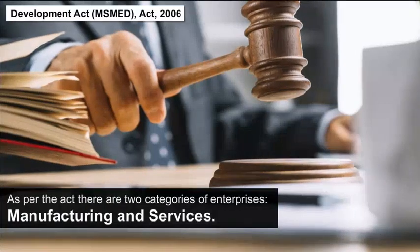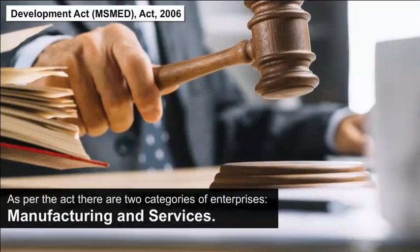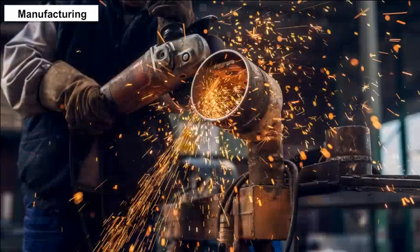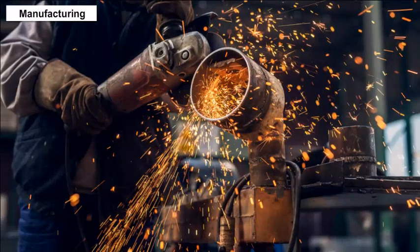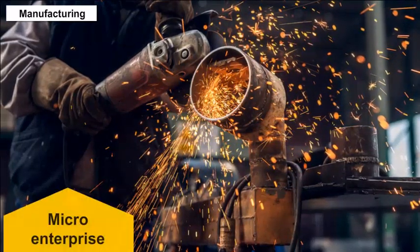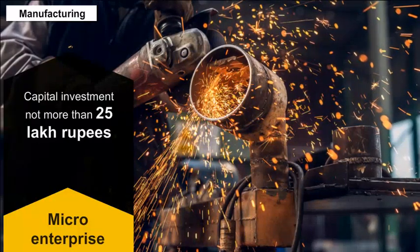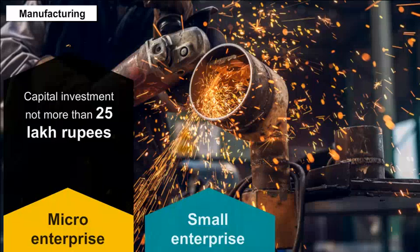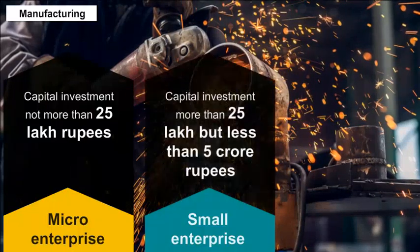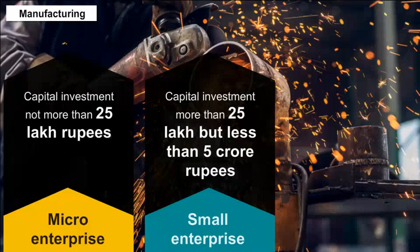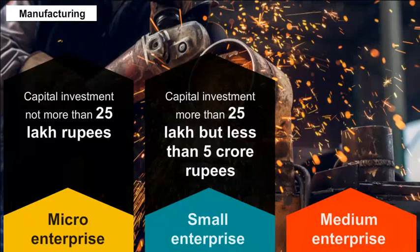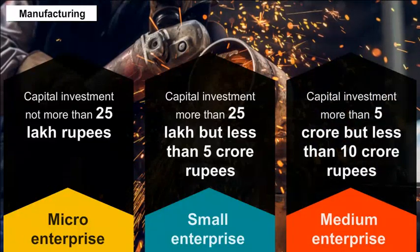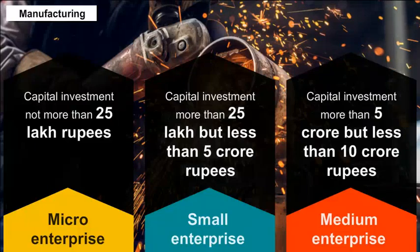As per the Act, there are two categories of enterprises: Manufacturing and Services. The Act defines three types of manufacturing enterprises: 1. Micro-enterprise — capital investment not more than 25 lakh rupees; 2. Small enterprise — capital investment more than 25 lakh but less than 5 crore rupees; 3. Medium enterprise — capital investment more than 5 crore but less than 10 crore rupees.